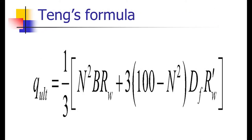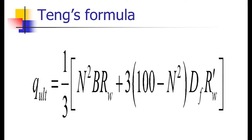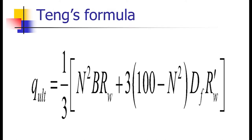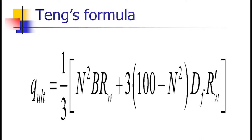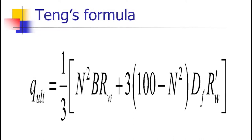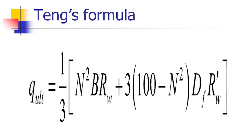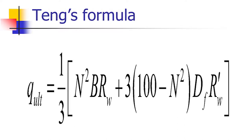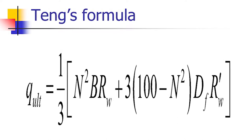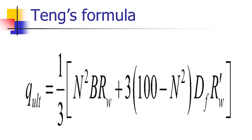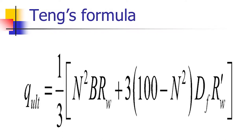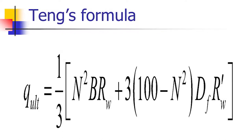Tank's formula uses N design squared as the bearing capacity factor. The formula includes one-third as a coefficient, B as the breadth of the foundation, Rw as the water table correction factor, and the expression (N² + 3) ÷ 100, with depth of foundation and water table factor R' also incorporated.